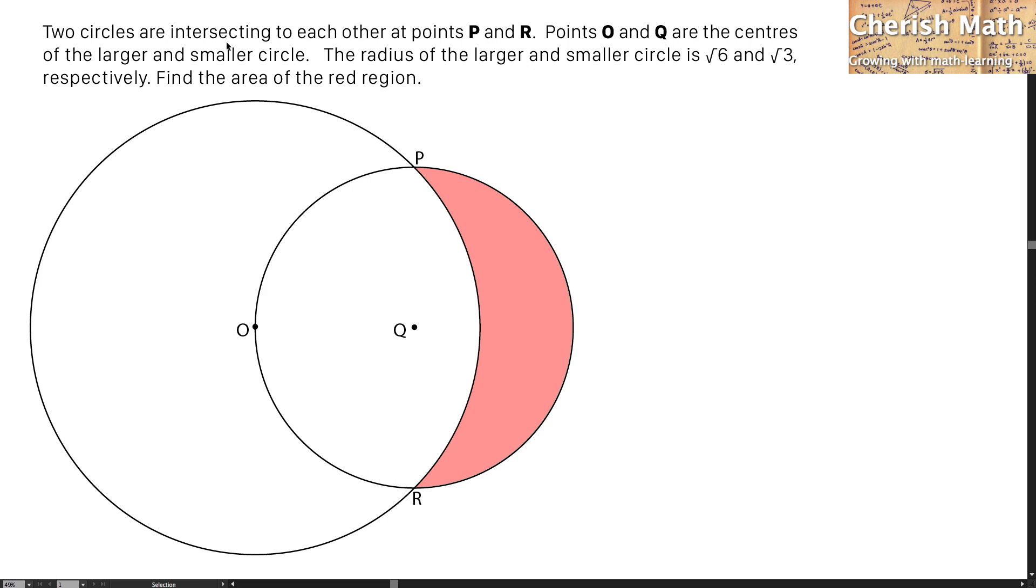Two circles are intersecting each other at points P and R. Points O and Q are the centers of the larger and smaller circle. The radius of the larger and smaller circle is √6 and √3, respectively. Find the area of the red region.